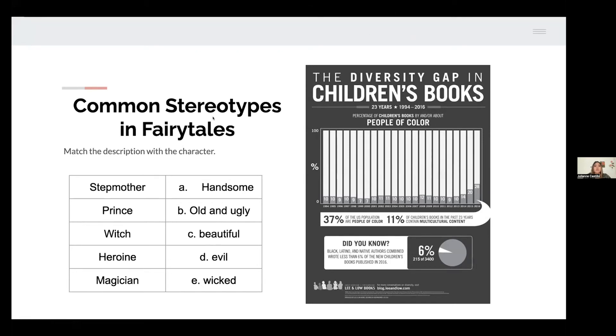Now on the right is an infographic done by the Cooperative Children's Book Center. In their study, they found that there was a lack of diversity specifically in people of color characters in story books. This study was done from 94 to 2016. In their study, it did show significant improvement in the character development of people of color characters. However, at the same time, people of color authors didn't also increase.